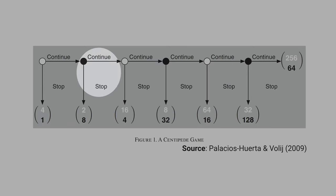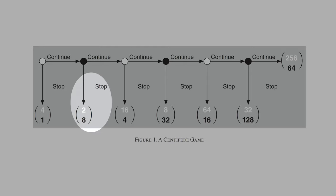If the white player continues, now the black player can choose continue or stop. If the black player decides to stop, he'll get $8 and the white player will get $2.